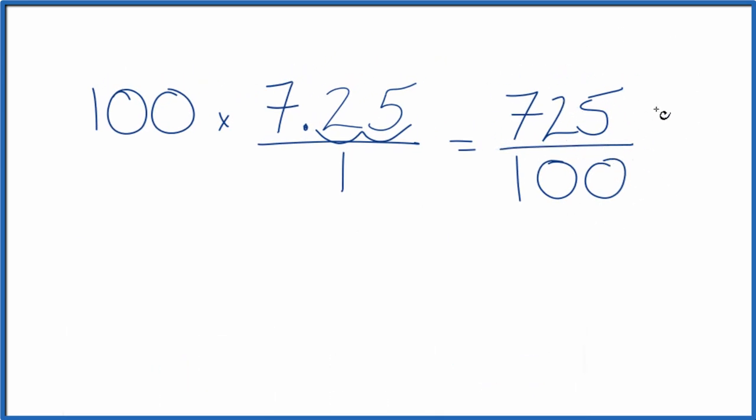Looks like 25 goes into 725 and 100 evenly. So 725 divided by 25 is 29, and 100 divided by 25 is 4.